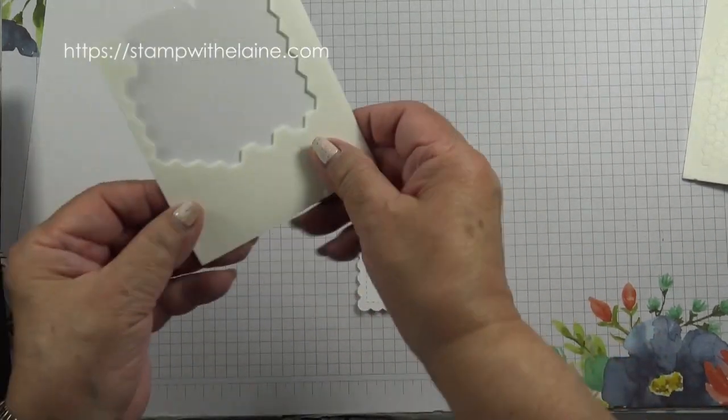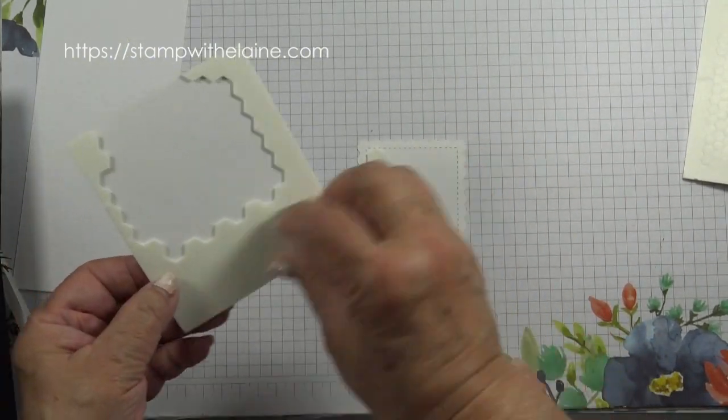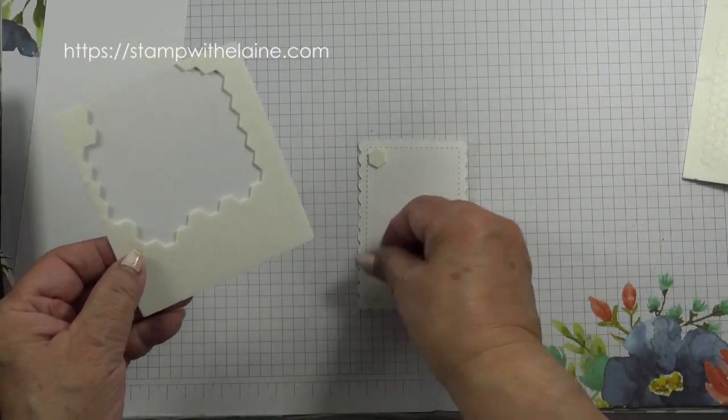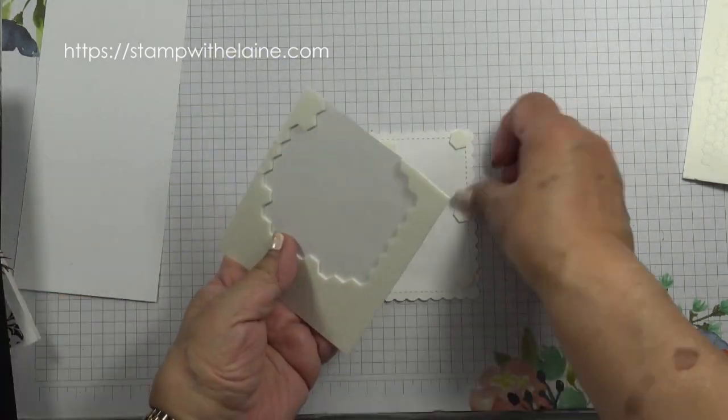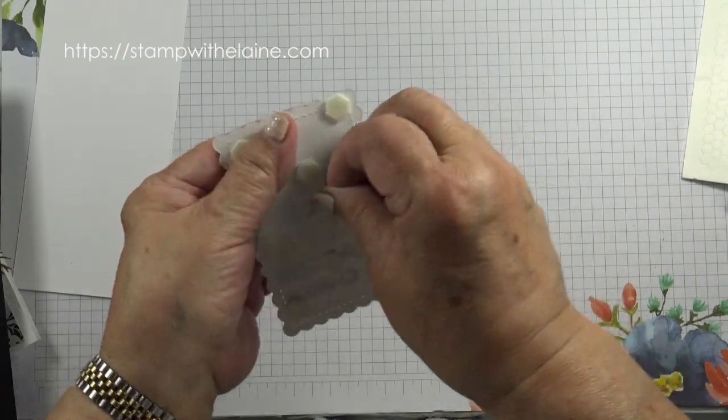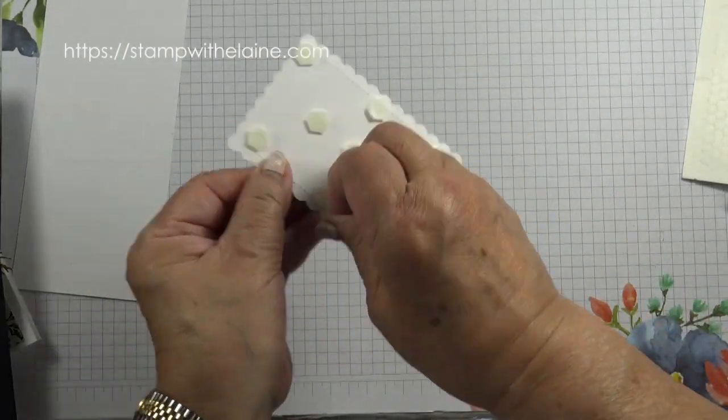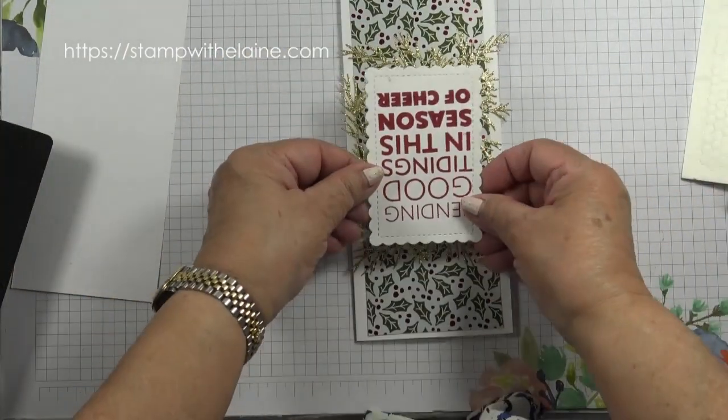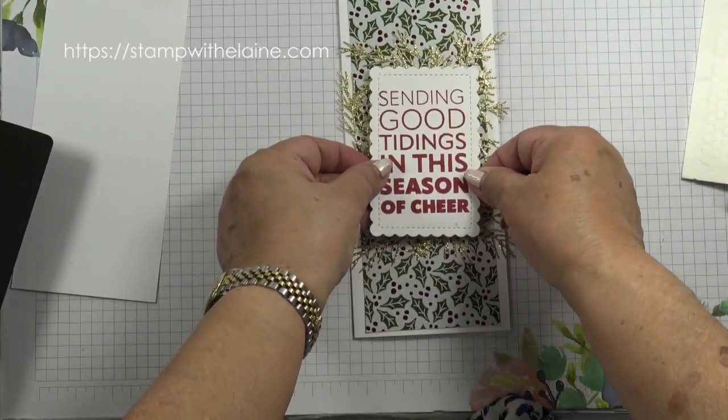Pop dimensionals on the back and then I can put that onto the card front. Remove the backing tape and pop that on the front of the card.